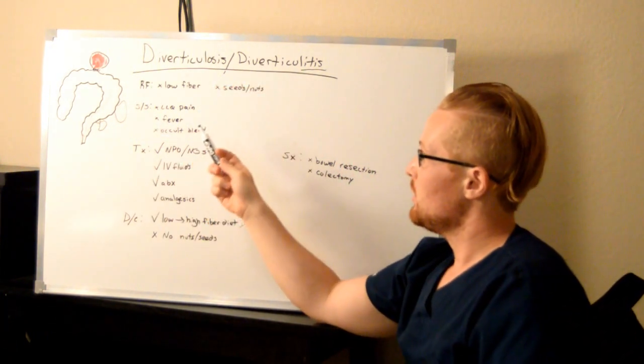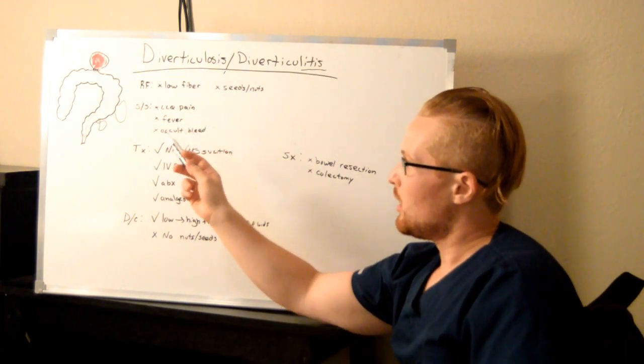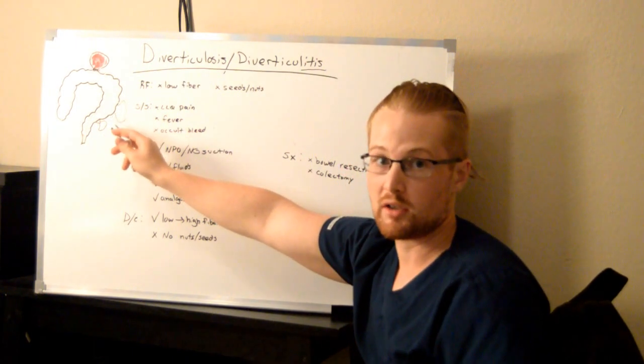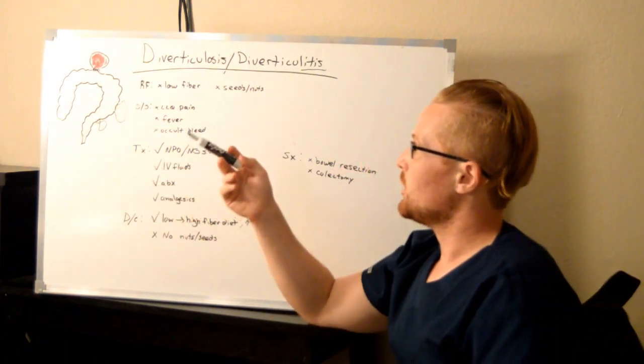Because you have inflammation, you'll have fever, and you may have occult bleeding. Because all of the inflammation and the damaging to the walls here could cause some blood vessels to rupture and cause some bleeding in the diverticulum.